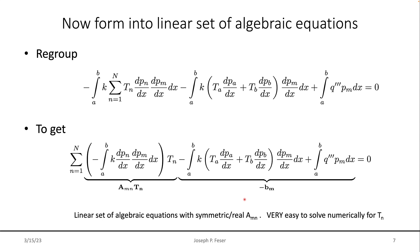And although I don't know how to prove it quickly, it turns out that for realistic problems, these also have positive eigenvalues. It's a symmetric, positive, definite matrix. Very easy to solve numerically for the unknown T sub n's.